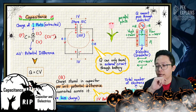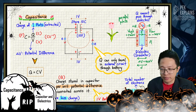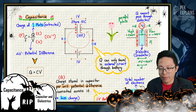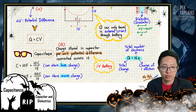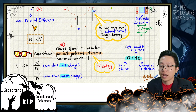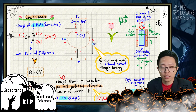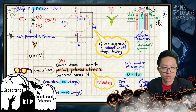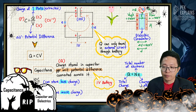Now let's talk about capacitance. Capacitance is actually the charge stored in a capacitor per unit potential difference connected across it — charge over potential difference, or charge over voltage.